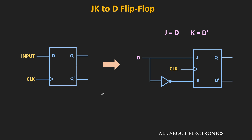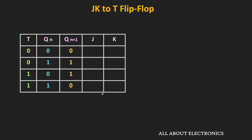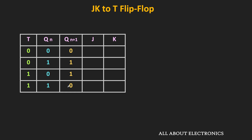Now let us see how to convert the JK flip-flop into the T flip-flop. Since the T flip-flop is our required flip-flop, let us write down its truth table. When T is 0, the flip-flop retains its current state: if Qn is 0 it stays 0, and if Qn is 1 it stays 1. When T is 1, the output toggles: if Qn is 0 it becomes 1, and if Qn is 1 it becomes 0.